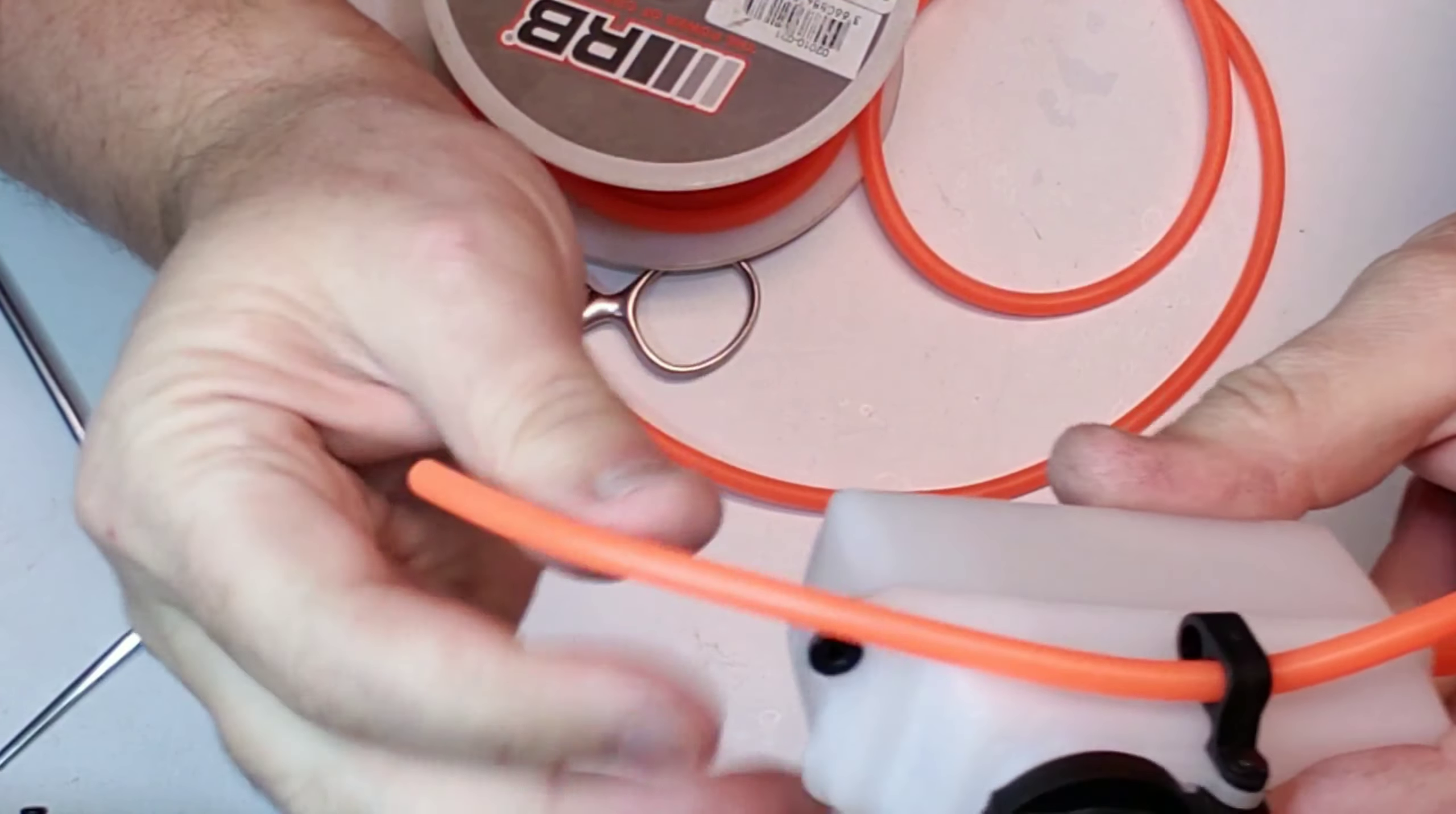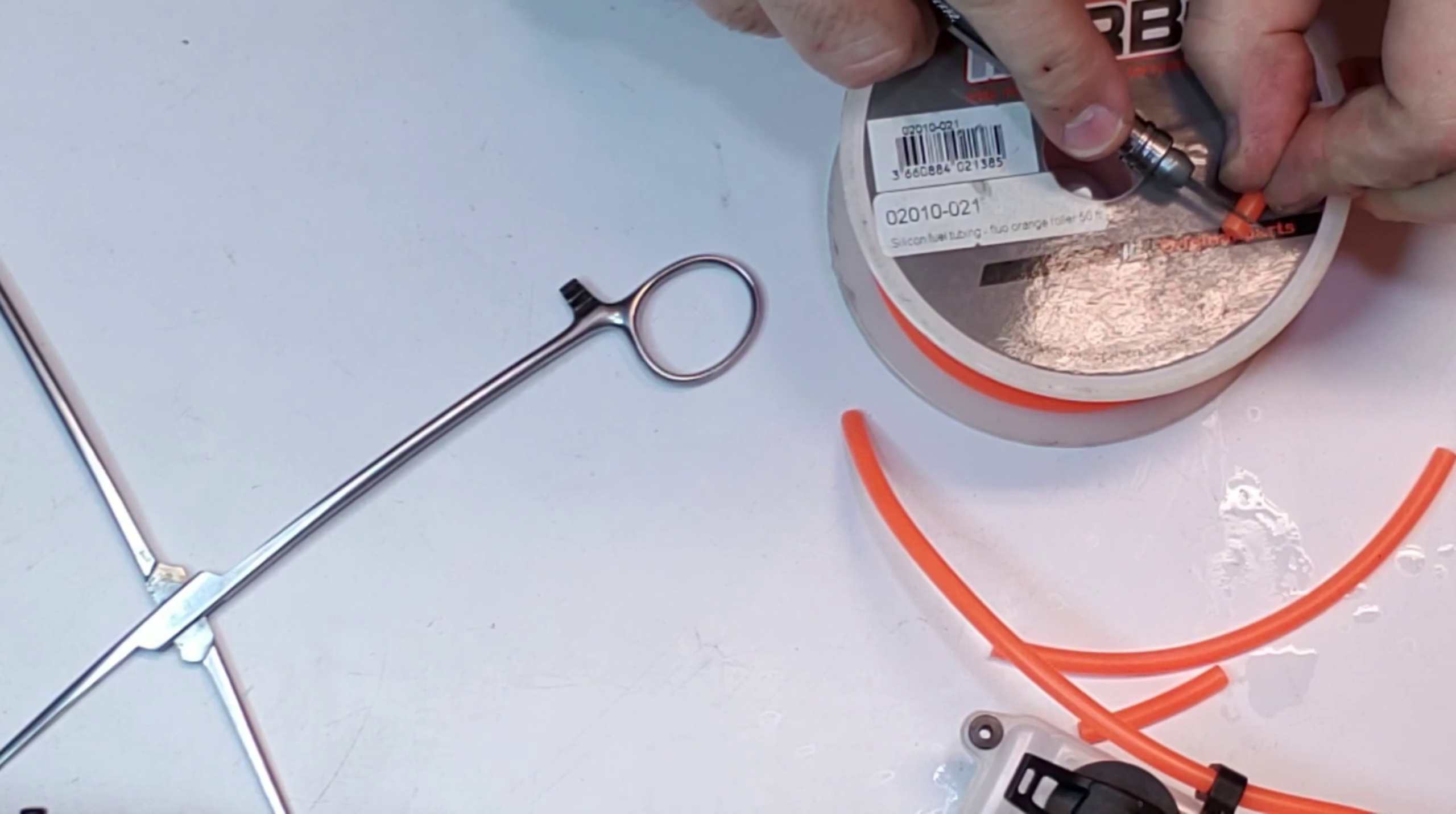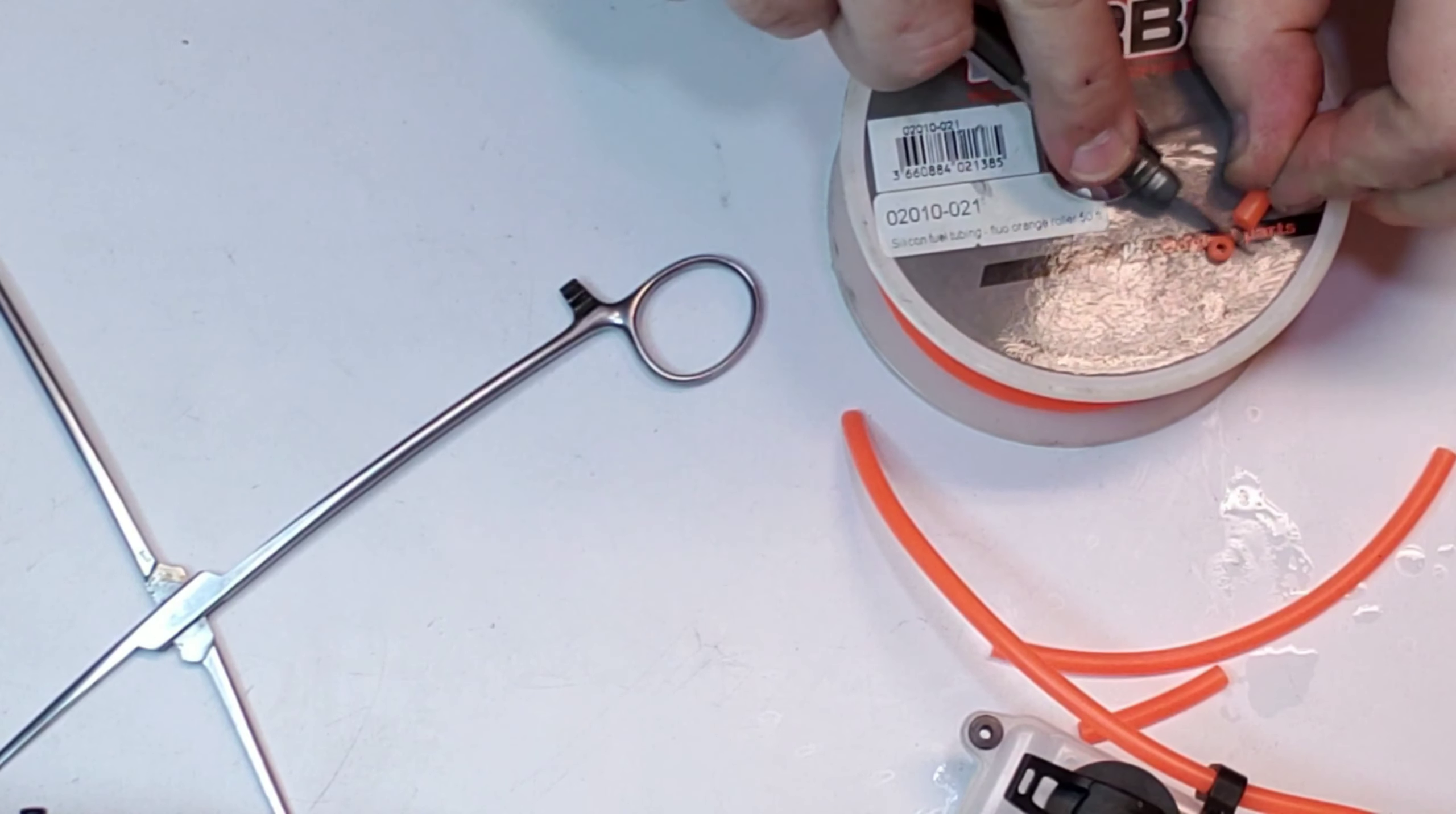And then I'm going to cut just a couple little o-rings. These act like a hose clamp sort of.